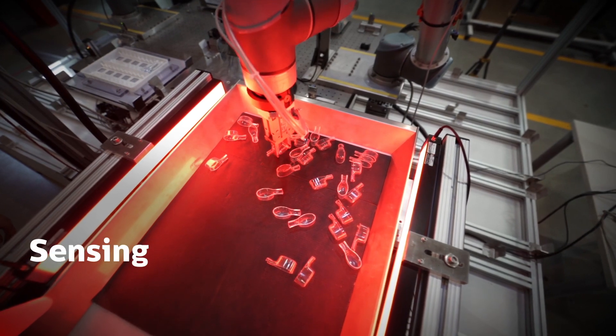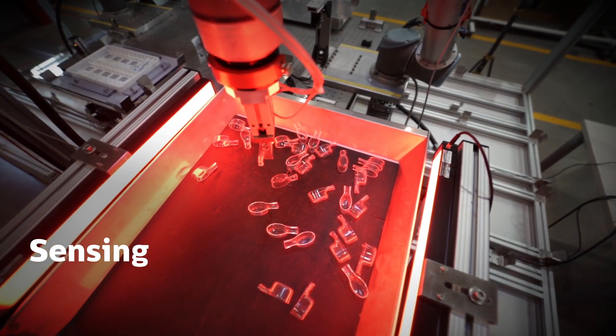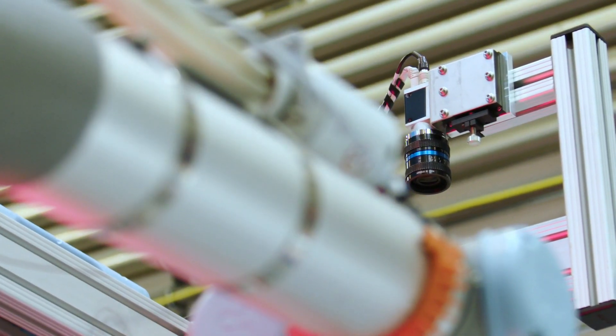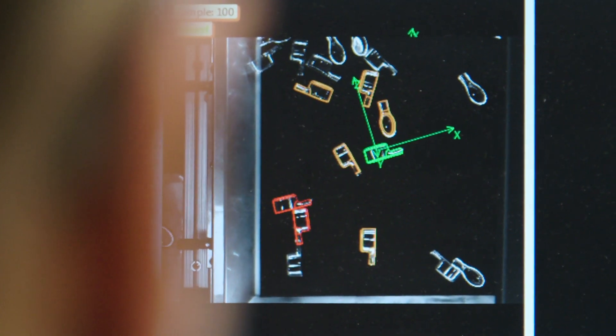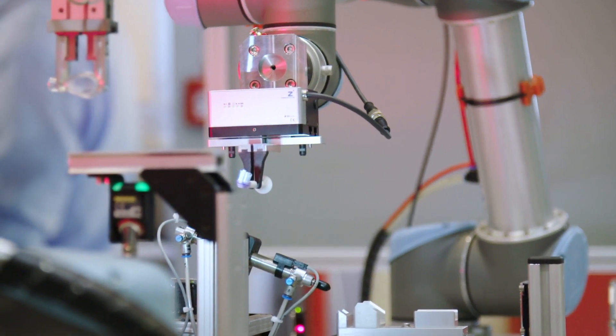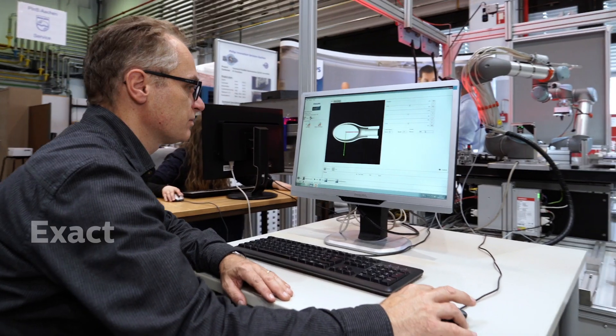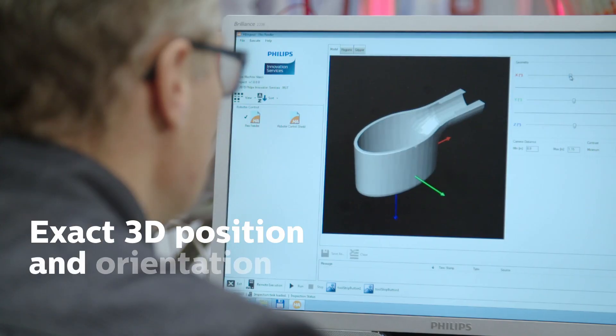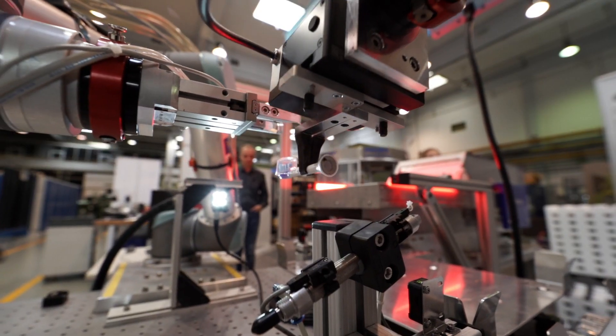Third, we deal with sensing to position and guide the robots. For instance, we combine product CAD data with camera images. We use a CAD model for training. This enables the vision system to find the exact 3D position and orientation of each product.